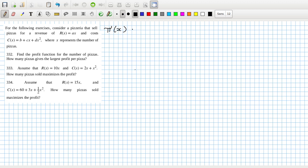So the profit function will be the revenue minus the cost. That's -dx² + (a - c)x - b.